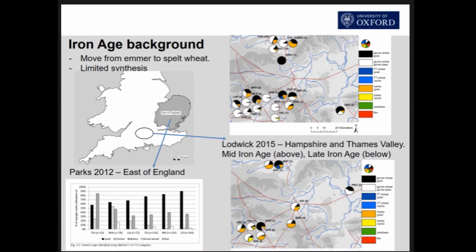In terms of archaeobotanical data for the Iron Age, there's been relatively limited amounts of synthesis. We broadly know that we have a move from emmer to spelt wheat as a major crop, and there have been two regional syntheses. Kate Parks undertook a detailed study of the east of England where she found a gradual decrease in emmer, increase in spelt, and continuity in six-row hulled barley. A smaller study in central southern Britain again showed spelt and emmer, six-row hulled barley, and very small proportions of pulses and free-threshing wheat.